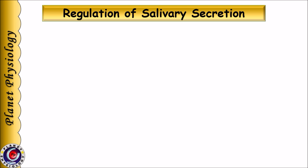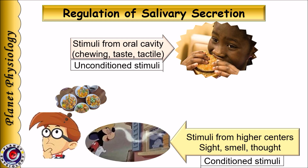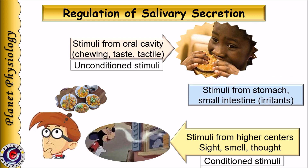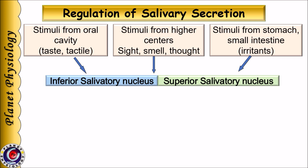Salivary secretion is regulated by both sympathetic and parasympathetic nerves, with no significant role of hormonal regulation. Saliva is secreted in response to various stimuli from the oral cavity, like taste of food and stimulation of tactile receptors, which constitute stimuli for the unconditioned reflex. Saliva is also secreted in response to sight, smell, or thought of food, which constitute stimuli for the conditioned reflex, arising from higher centres like the cerebral cortex and hypothalamus. Saliva is also secreted in response to irritants in the stomach or small intestine. Signals from all these stimuli reach the superior and inferior salivatory nuclei located in the pons and medulla respectively.